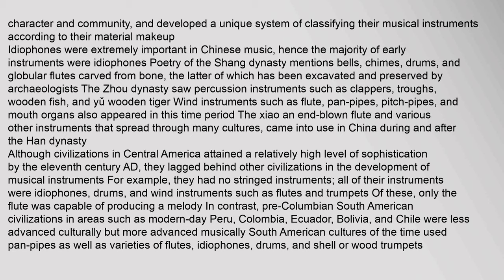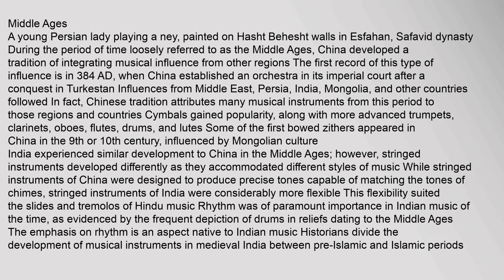Although civilizations in Central America attained a relatively high level of sophistication by the 11th century AD, they lagged behind other civilizations in the development of musical instruments. They had no stringed instruments; all of their instruments were idiophones, drums, and wind instruments such as flutes and trumpets, of which only the flute was capable of producing a melody. In contrast, pre-Columbian South American civilizations in areas such as modern-day Peru, Colombia, Ecuador, Bolivia, and Chile were less advanced culturally but more advanced musically, using pan pipes, varieties of flutes, idiophones, drums, and shell or wood trumpets.